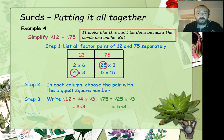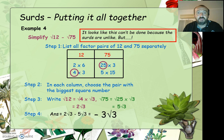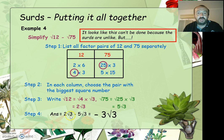Now, if you have a look at what this simplifies to: root 12 minus root 75 simplifies down to 2 root 3 take 5 root 3, and of course that just equals negative 3 root 3. So we had 2 surds here that looked like there was nothing we could do to simplify them, until we actually simplified each one. We first had to do this simplification process, and then we saw that we ended up with 2 like surds and could go on from there.